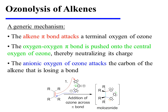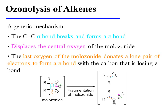The molozonide is fairly unstable and fragments readily. The fragmentation of the molozonide is also described using three mechanistic arrows. The molozonide contains not just one but two weak oxygen-oxygen bonds, and that's part of the reason it fragments so quickly. The carbon-carbon sigma bond of what was once the alkene breaks and forms a carbon-oxygen pi bond.